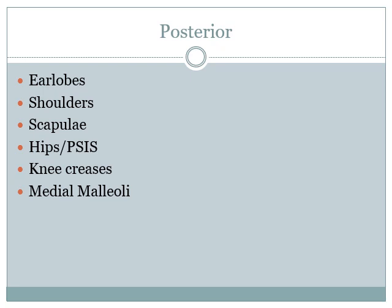Here you have the posterior alignment. Note the earlobes, the shoulders, and the scapula. When you look at the shoulders, it's not uncommon to see them not quite be totally even — the non-dominant shoulder tends to sit a little higher. So if someone's right-handed, their right shoulder tends to dip a little more and be held a little lower. With the scapula, you're looking for any winging of the scapula, and whether the medial border is very prominent. Also check the hips — the PSIS, or posterior superior iliac spine — make sure they line up, along with the knee creases and medial malleoli.